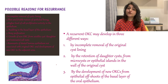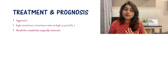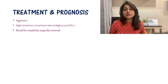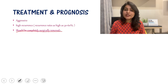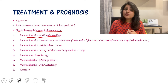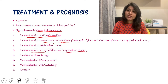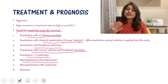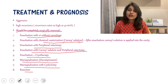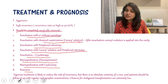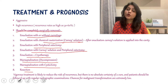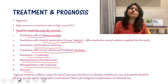Treatment depends on factors like age of the patient, site, and size of the lesion. Options include enucleation with or without curettage, enucleation followed by chemical cauterization using Carnoy's solution, enucleation with peripheral osteotomy, enucleation with Carnoy's solution plus peripheral osteotomy, enucleation plus cryotherapy using liquid nitrogen, marsupialization or decompression, marsupialization with cystectomy, or resection. Vigorous treatment reduces recurrence risk but there is no absolute cure. Regular radiographic follow-up is required. Malignant transformation chances are extremely low.